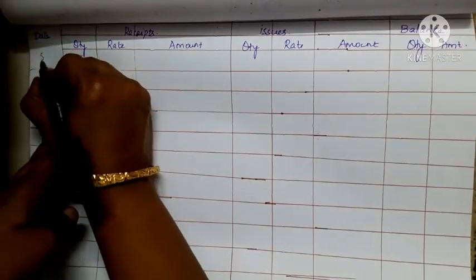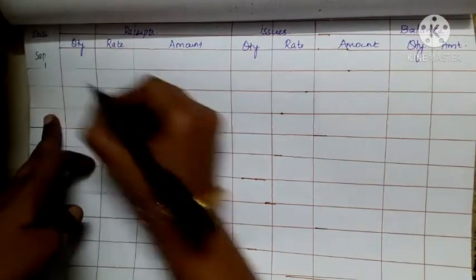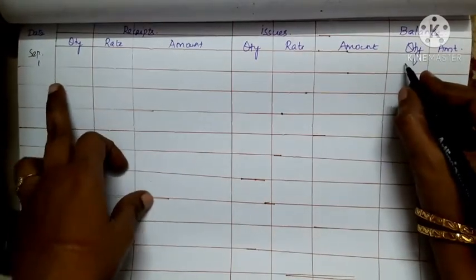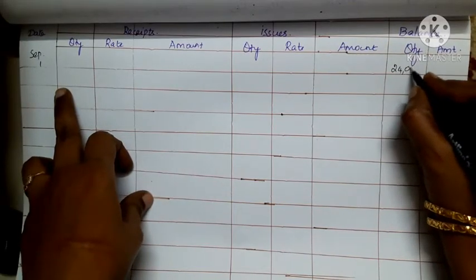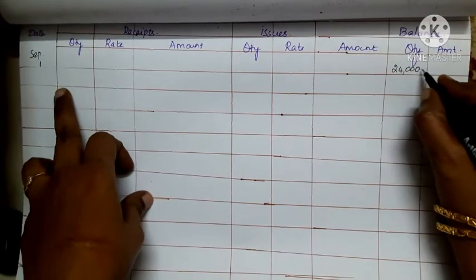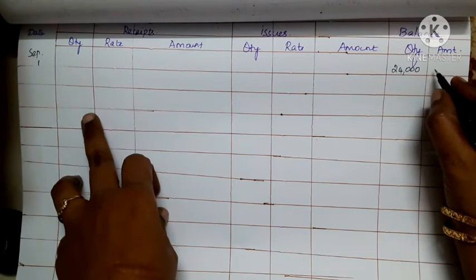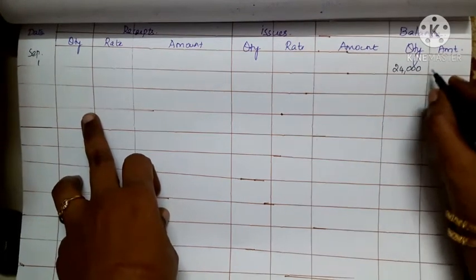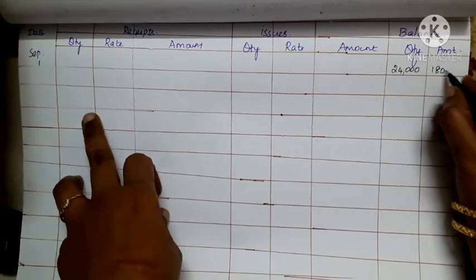September 1 — the opening balance quantity is 24,000 kg at a rate of 7.50.